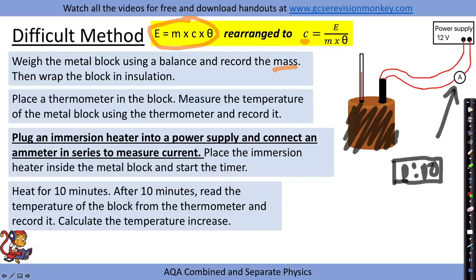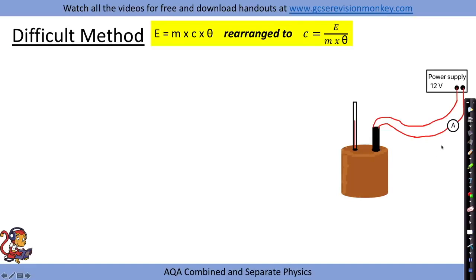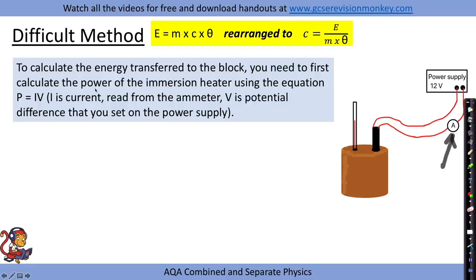We heat it for 10 minutes like before and after 10 minutes read the temperature of the block and calculate the temperature increase. Mass and theta are the same as before — what's different is how we calculate energy. We use the equation for power: P equals I times V, where I is the current read from the ammeter and V is the potential difference set on the power supply.